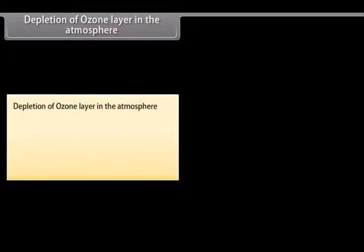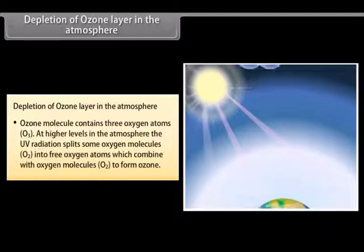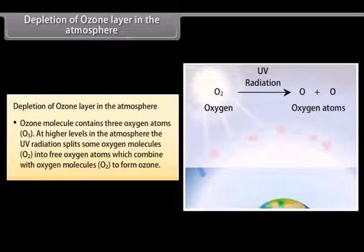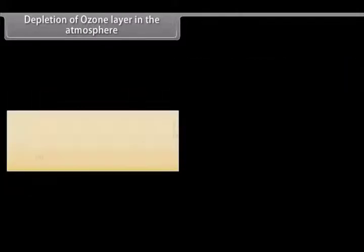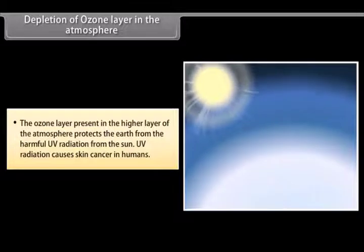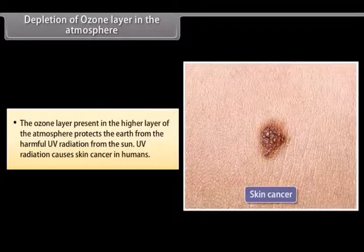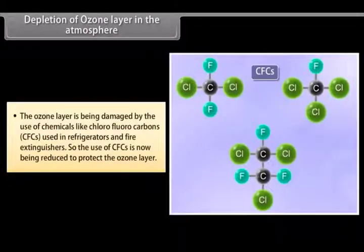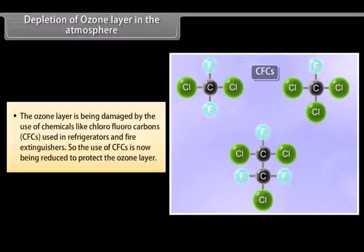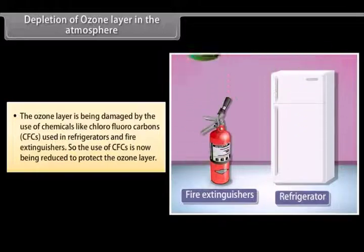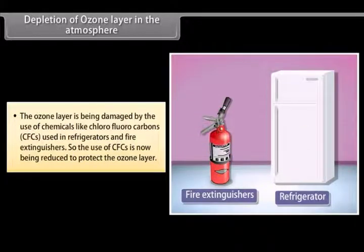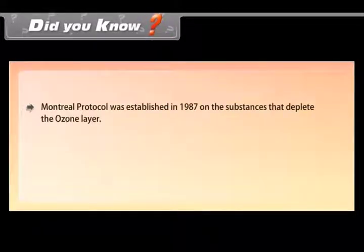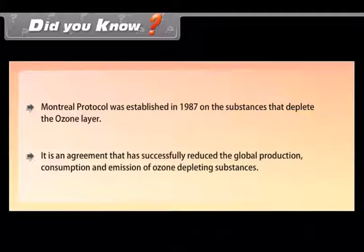Depletion of ozone layer: Ozone molecule contains three oxygen atoms, O3. At higher levels in the atmosphere, UV radiation splits some oxygen molecules (O2) into free oxygen atoms, which combine with oxygen molecules (O2) to form ozone. The ozone layer protects the earth from the harmful UV radiation from the sun. UV radiation causes skin cancer in humans. The ozone layer is being damaged by the use of chemicals like chlorofluorocarbons (CFCs), used in refrigerators and fire extinguishers, so the use of CFCs is now being reduced. The Montreal Protocol was established in 1987 on substances that deplete the ozone layer, and it has successfully reduced the global production, consumption and emission of ozone-depleting substances.